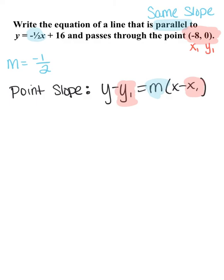Now if I take our given information and plug it into the appropriate spots in the formula, I'm going to have y minus that y sub 1 number, which is 0 for this example.